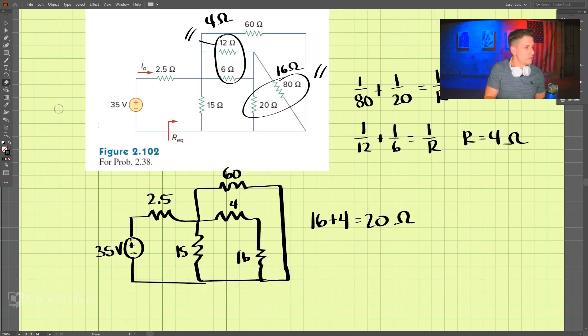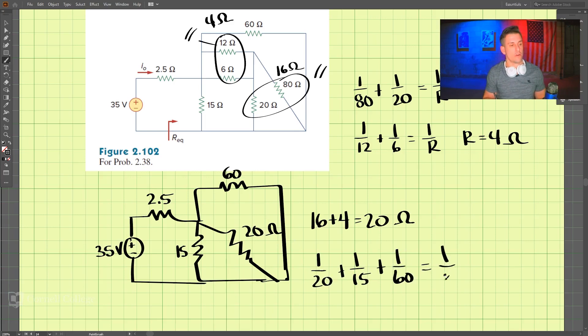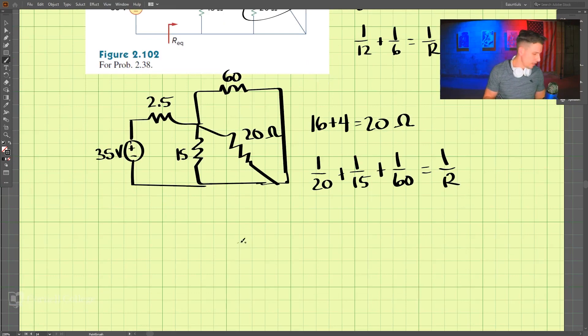And so let's put in 20 ohms there, 20 ohms. Now we have 15, 20, and 60. These are all in parallel. So we can add those together, 1 over 20 plus 1 over 15 plus 1 over 60 equals 1 over R, combining all three of these. And that comes out to be R is equal to 7.5 ohms.